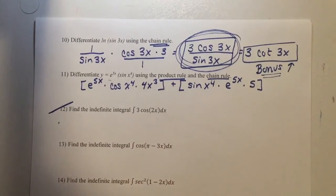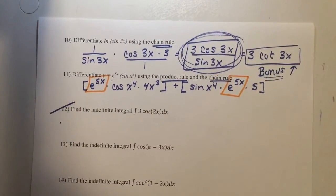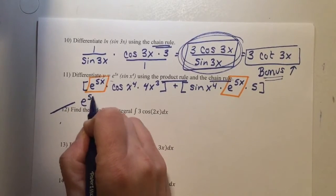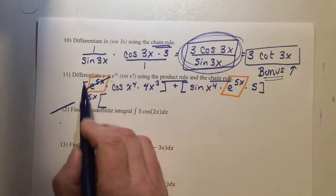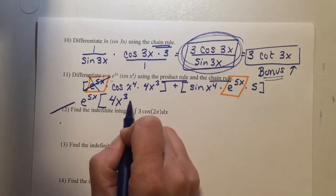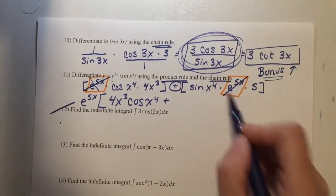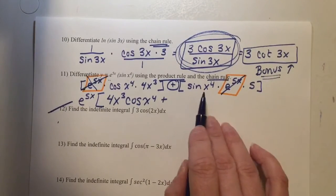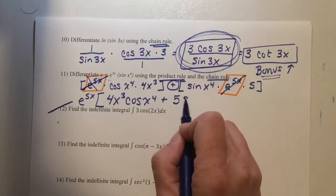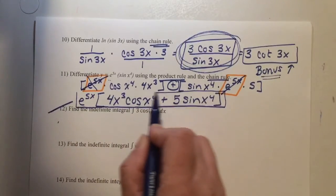Now in the product rule you take out what they have in common. Both chunks have e to the power of 5x in common — so you take that out. e to the 5x goes on the outside. What I have left from the first part is cosine of x to the power of 4 times 4x cubed — so it's 4x cubed times cosine of x to the power of 4. There is a plus sign. e to the 5x is gone because I took it out front. So I have 5 times sine of x to the power of 4 — that 5 goes in front — giving the final answer: e to the 5x times the quantity 4x cubed cosine of x to the fourth, plus 5 sine of x to the fourth.